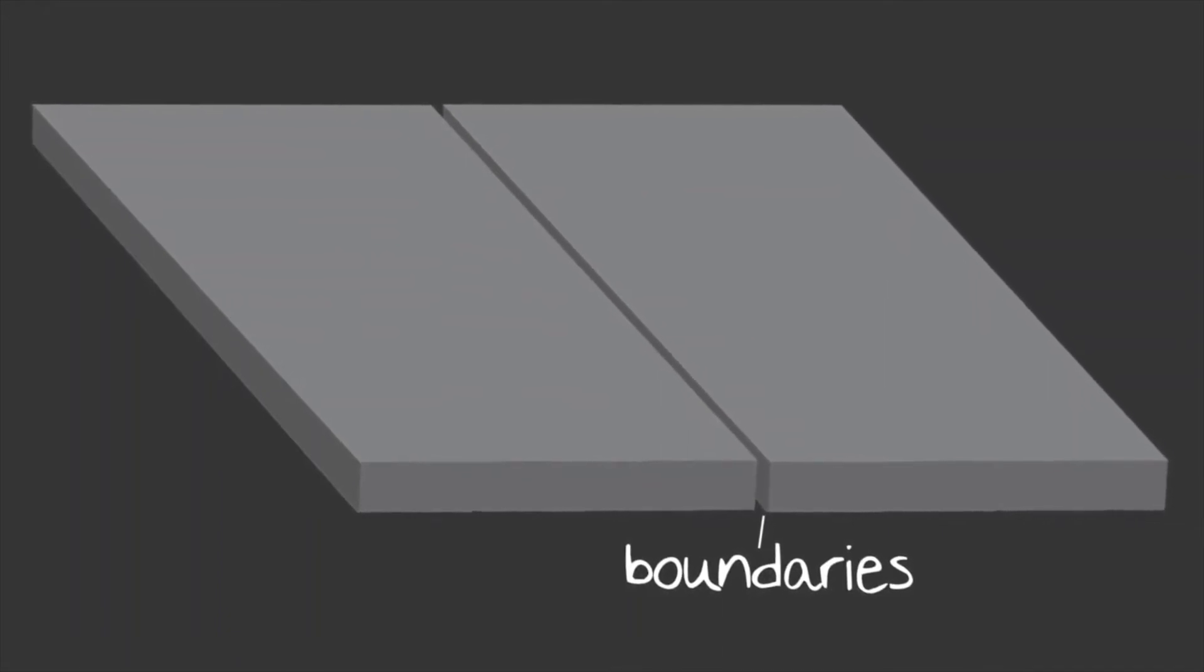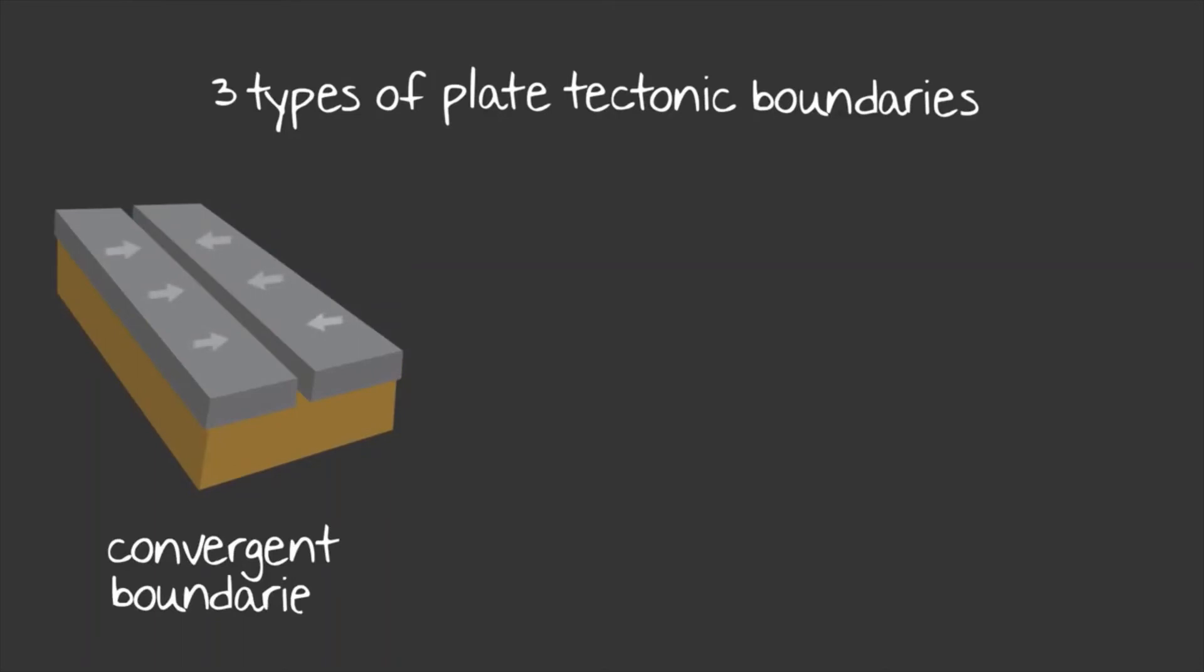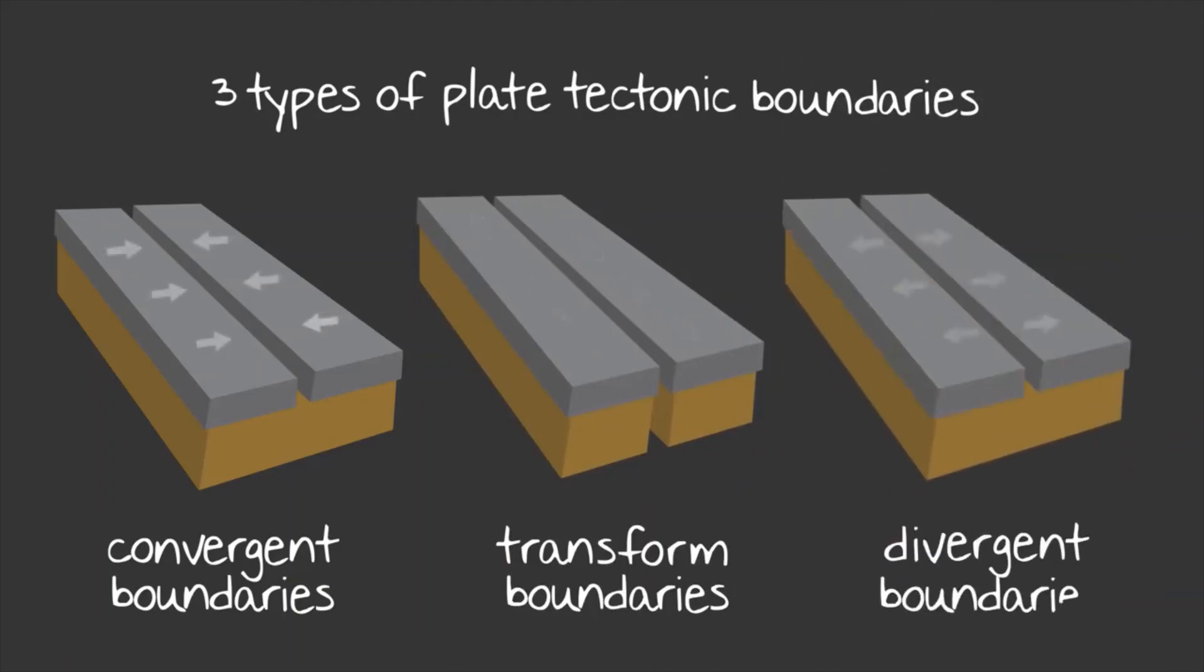Where these plates meet are called boundaries, and there are three kinds. Convergent boundaries occur when two plates are moving towards one another. Transform boundaries occur when two plates are sliding past one another. And divergent boundaries occur when two plates are moving away from one another. Let's take a closer look at what happens at each of these boundaries.